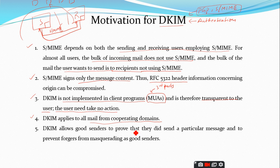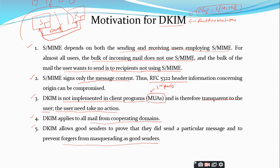DKIM applies to all mail from cooperating domains, so DKIM can be used by anybody. DKIM allows good senders to prove that they sent a particular message and prevents forgers from masquerading as good senders. Since DKIM provides authentication through signatures, once signed and sent, the receiver can verify the signature and check whether the message is from the genuine user or whether it is forged, so everything is clear at the receiving end.